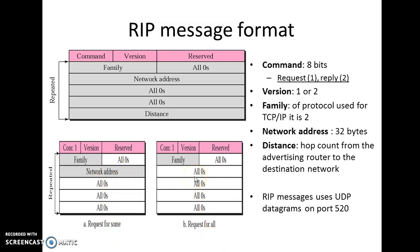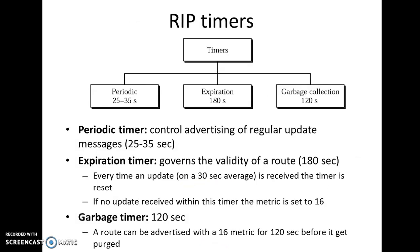Next are the RIP timers. There are three timers: periodic, expiry, and garbage. The periodic timer is dedicated to a 25 to 35 second interval. The expiry timer has a time period of 180 seconds. The garbage collection timer has a time limit of 120 seconds.